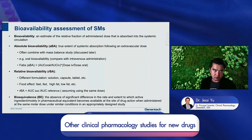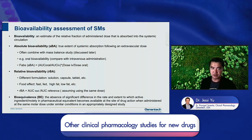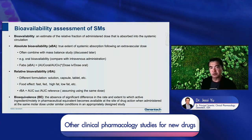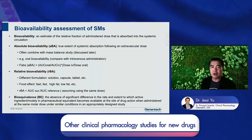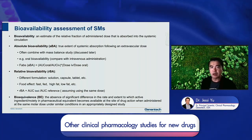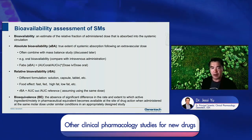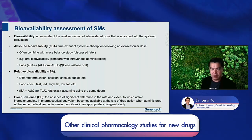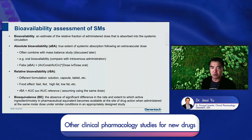Absolute bioavailability is specifically related to bioavailability via oral or subcutaneous route versus IV, and there is a specific calculation equation listed here. Relative bioavailability is comparing exposures to understand the impact of formulation or food — how exposure changes after a change in formulation or food compared to the reference formulation or dosing without food. Bioequivalence is the term used after performing a BE study, where we can say there is no statistically significant difference in exposure between the test formulation and the reference formulation.